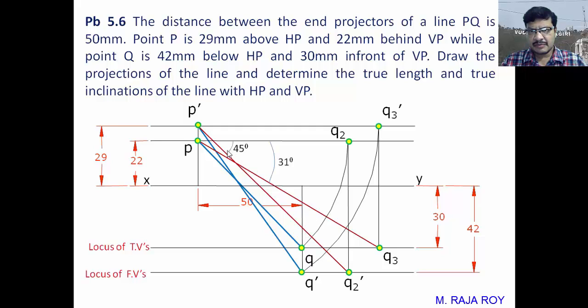This inclination with respect to XY is the inclination with respect to HP — this is theta. In this way you can solve this problem. For this type of indirect problem, there is no need to go up to the simple position; you can solve the problem at this stage itself.